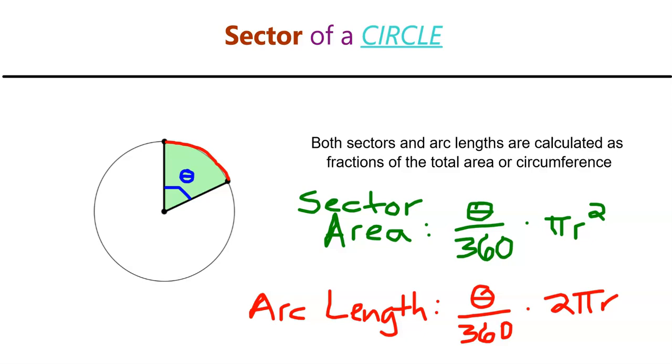You're going to use those formulas for the arc length and the sector area, and you are going to find the sector area and arc length in these two circumstances. One where the radius is eight centimeters, the other where the diameter is four inches. In the eight-centimeter circle, the central angle is 45 degrees. And in the four-inch diameter circle, the central angle is 60 degrees.